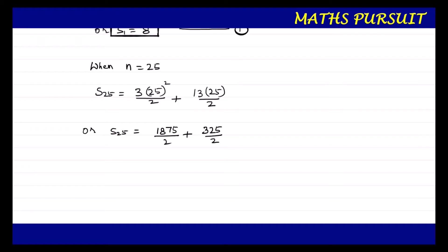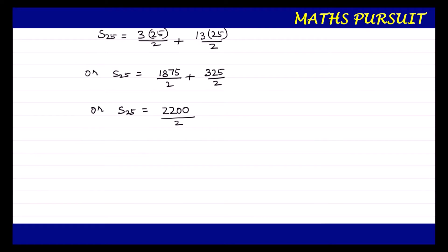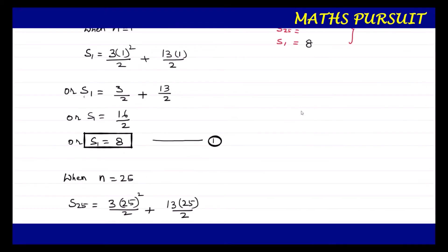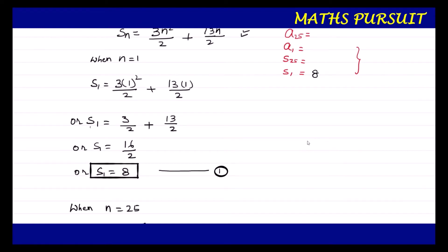So S25 = (1875 + 325) upon 2 = 2200 upon 2 = 1100. We are able to find out that S25 = 1100. Let us name this equation number 2. This is our second requirement.